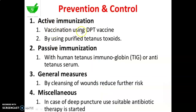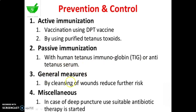Prevention and control for Tetanus: active immunization — vaccination using DPT, that is diphtheria, pertussis and tetanus vaccine, and by using purified tetanus toxoids. Passive immunization with human tetanus immunoglobulin, that is TIG, or anti-tetanus serum. General measures: cleansing of wounds reduces further risk. In case of deep puncture wounds, use suitable antibiotic therapy.